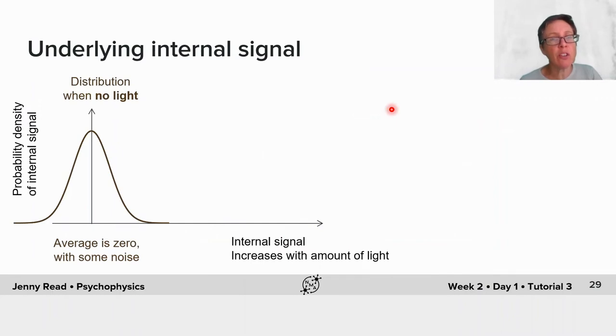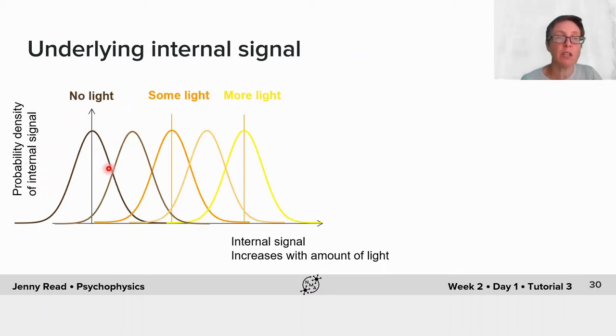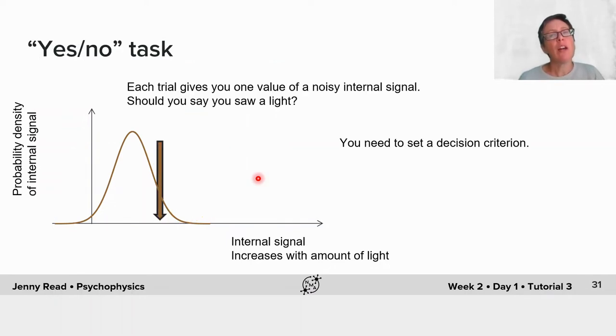Let's go back to the underlying internal signal. I'm going to assume that this is a noisy signal. For example, when there's no light, the average value of this signal is zero, but there's some noise. If I plot its probability density function, let's say that's Gaussian, it's got a finite SD. As I increase the amount of light, then the mean value of the distribution increases.